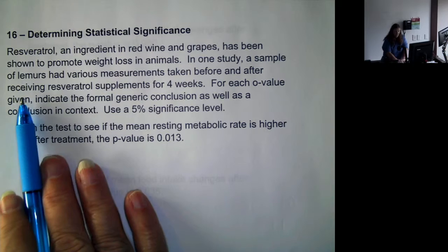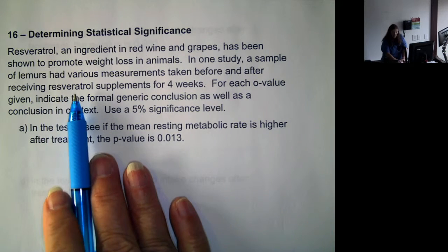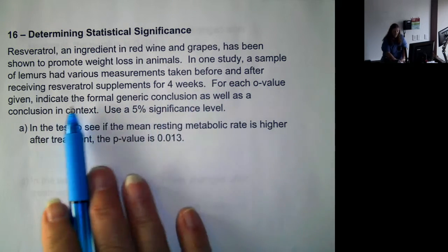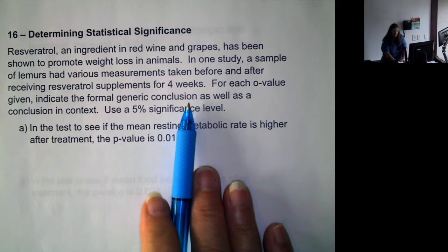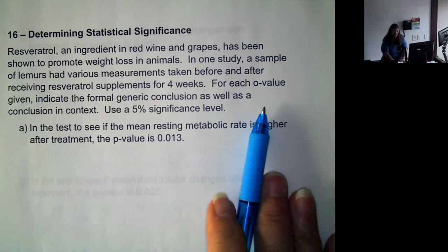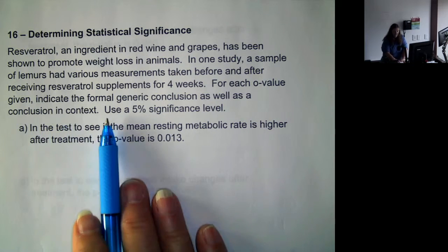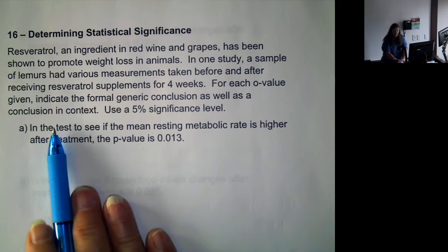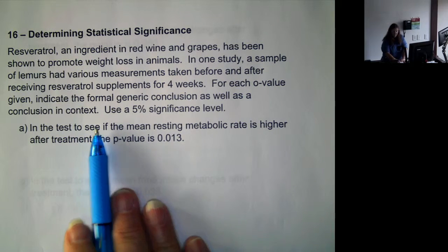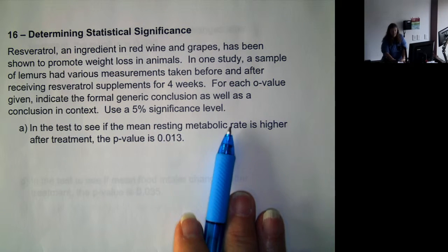In one study, a sample of lemurs had various measurements taken before and after receiving resveratrol supplements for four weeks. For each p-value given, indicate the formal generic conclusion as well as a conclusion in context. Use the 5% significance level.